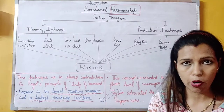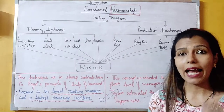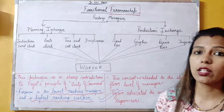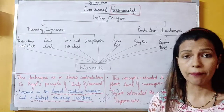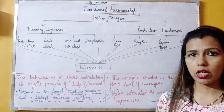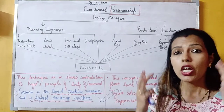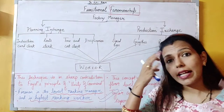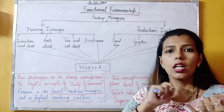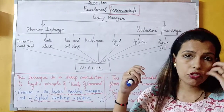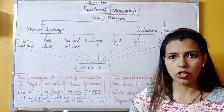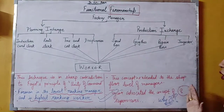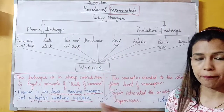This is an important question from your VIVA and CBSE board objective point of view: why did Taylor advocate the concept of eight supervisors? Taylor demanded that a supervisor or Foreman should be intelligent, know how to repair machines, and be a strict disciplinarian. Since it's not possible to find all these qualities in one person, Taylor advocated the concept of eight supervisors over a worker, divided into a planning category and a production category.